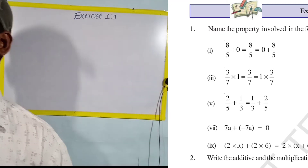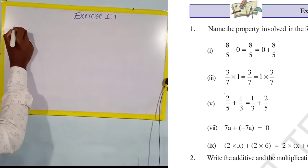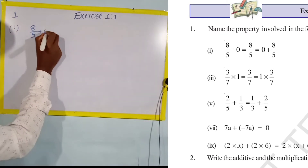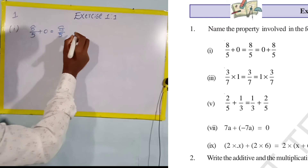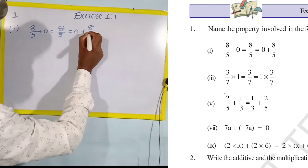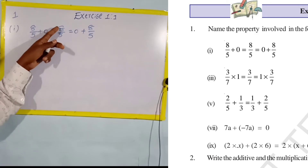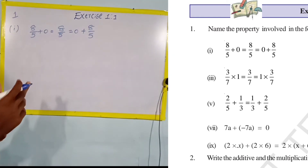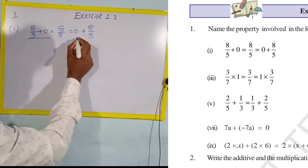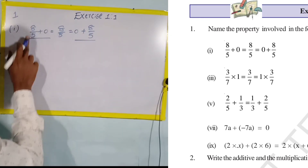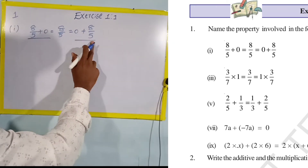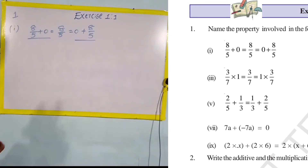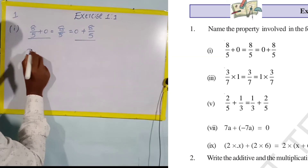Name the property involved in the following. First one: eight by five plus zero is equal to eight by five, which is equal to zero plus eight by five. Consider one plus zero equals zero plus one — the result is the same. This is the additive identity property, because zero is the additive identity.